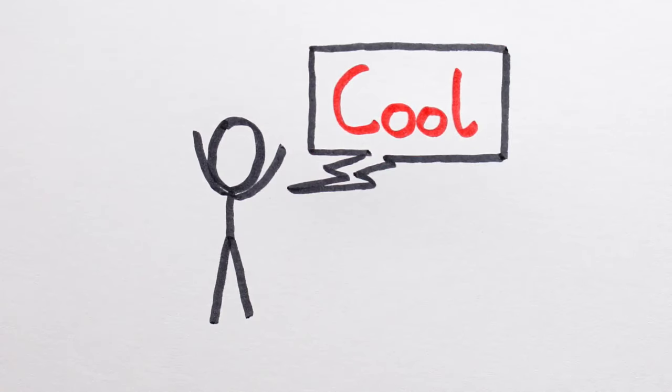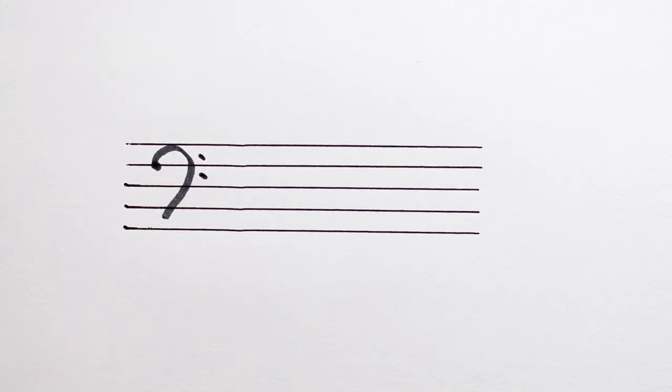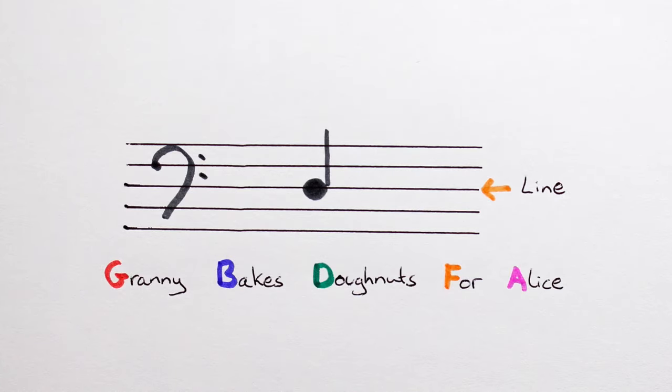Let's do some examples. What's the pitch name of this note? Well, it's on a line. So we can use the Granny bakes donuts for Alice rhyme. Starting at the bottom line, we say Granny bakes donuts. D for donuts, so our note is called D.